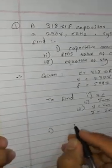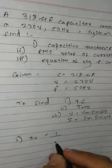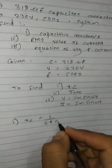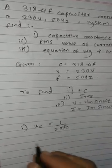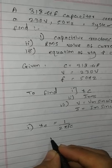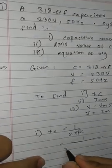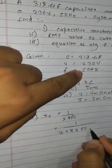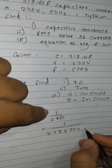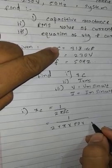First, XC formula. You should remember this. Capacitive reactance formula is 1 over 2 pi F C. So that's 1 over 2 pi times 50 times C. The C value is in microfarad, so we need to convert it.